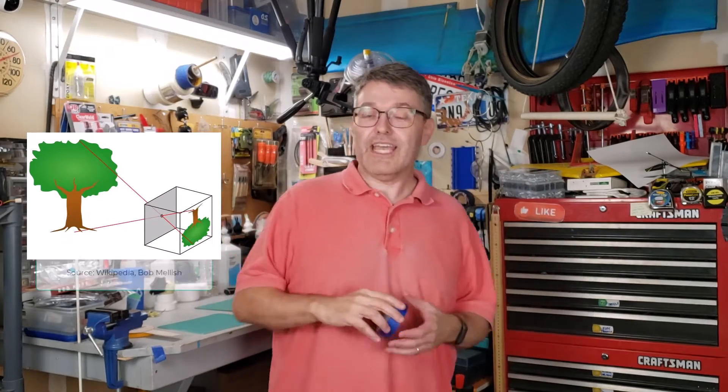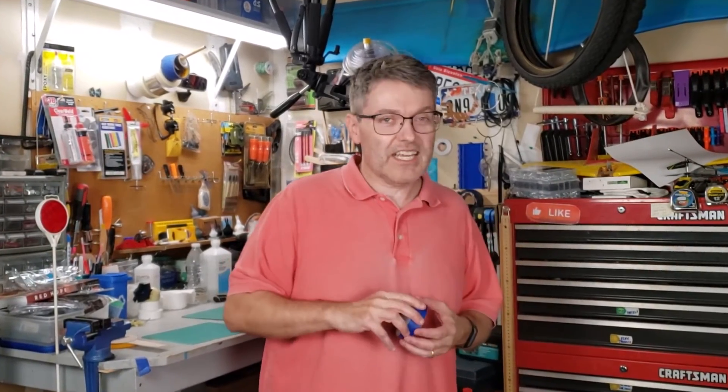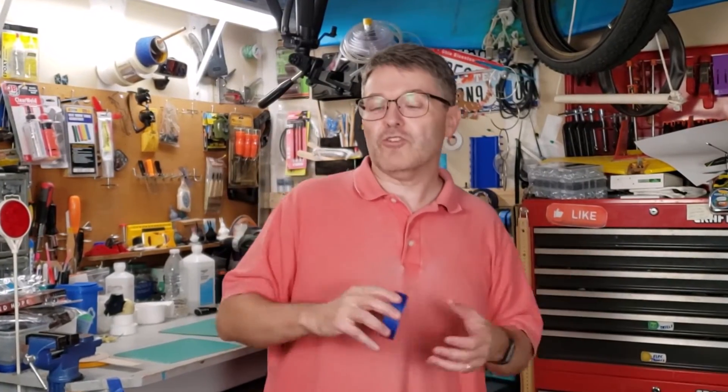Pinhole cameras, sometimes called camera obscura, have been around for over 2,000 years. These are one of the simplest and most effective ways to project the sun's image onto paper for multiple people to view at the same time. These are great for solar eclipses and the way they work is pretty genius.